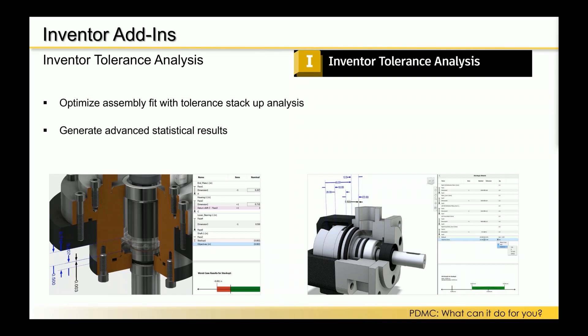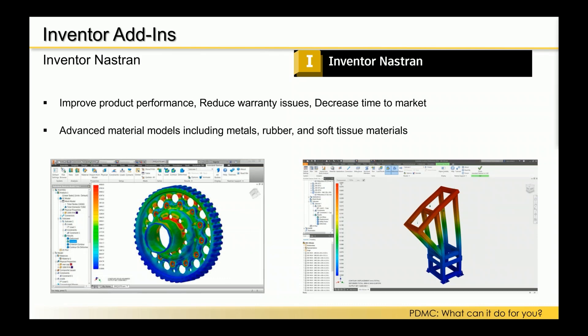The Tolerance Analysis add-in helps users make more informed decisions about manufacturing tolerances. We can accurately calculate the cumulative effect of geometric dimensioning and tolerancing, verify manufacturing tolerances, and communicate those results. We can look at things like assembly fit with a tolerance stack-up analysis and statistical results — right in the designer's hands, at the early stages. Getting these tools to the designer early helps save time to market.